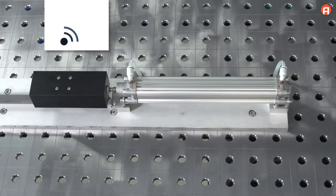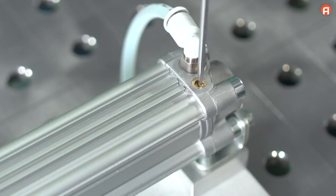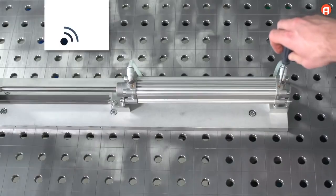To adjust the cushioning, slowly loosen the throttling screw. The cylinder noise will increase slightly, but the piston vibrations will already start to decrease.